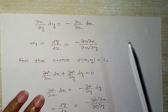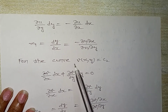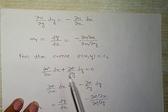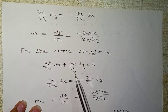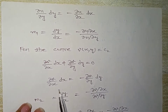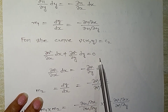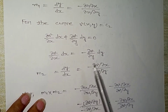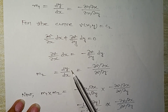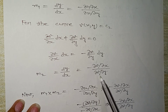Just as we did for curve 1, we partially differentiate curve 2: v(x,y) = c₂. We get: (∂v/∂x)dx + (∂v/∂y)dy = 0, so (∂v/∂x)dx = −(∂v/∂y)dy. Therefore M₂ = −(∂v/∂x)/(∂v/∂y).